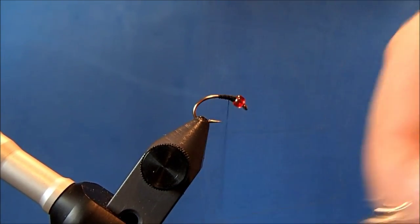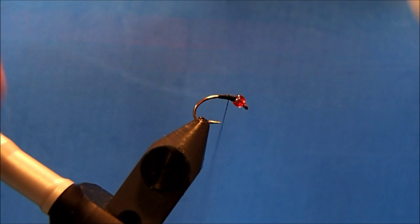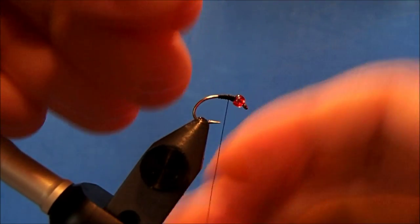Now I can take my sections of hurl, making sure they're relatively the same width because I'll tie them in together and bring them both up together. I'm trimming the sections and tying these in following the contour of the hook shank.